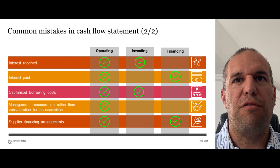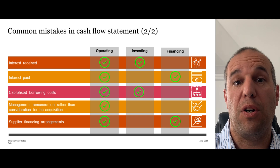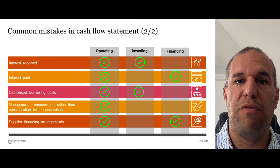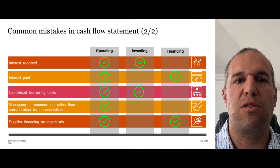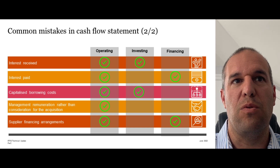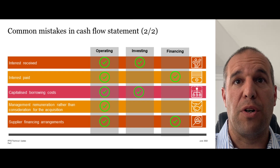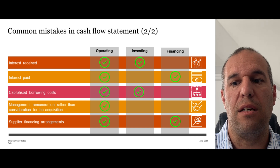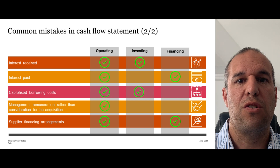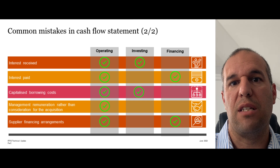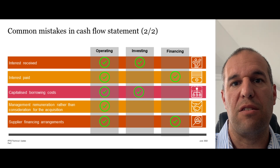Interest received has a policy choice under IAS 7 — it can be shown as either operating or investing. The key point is to be consistent with your chosen accounting policy. A similar policy choice exists for interest paid. Capitalized borrowing costs could be either operating or investing depending on the nature of the asset the interest was capitalized into — if you capitalize interest into inventory it will be operating; if into an item of PPE that you're building, it will be classified as investing.